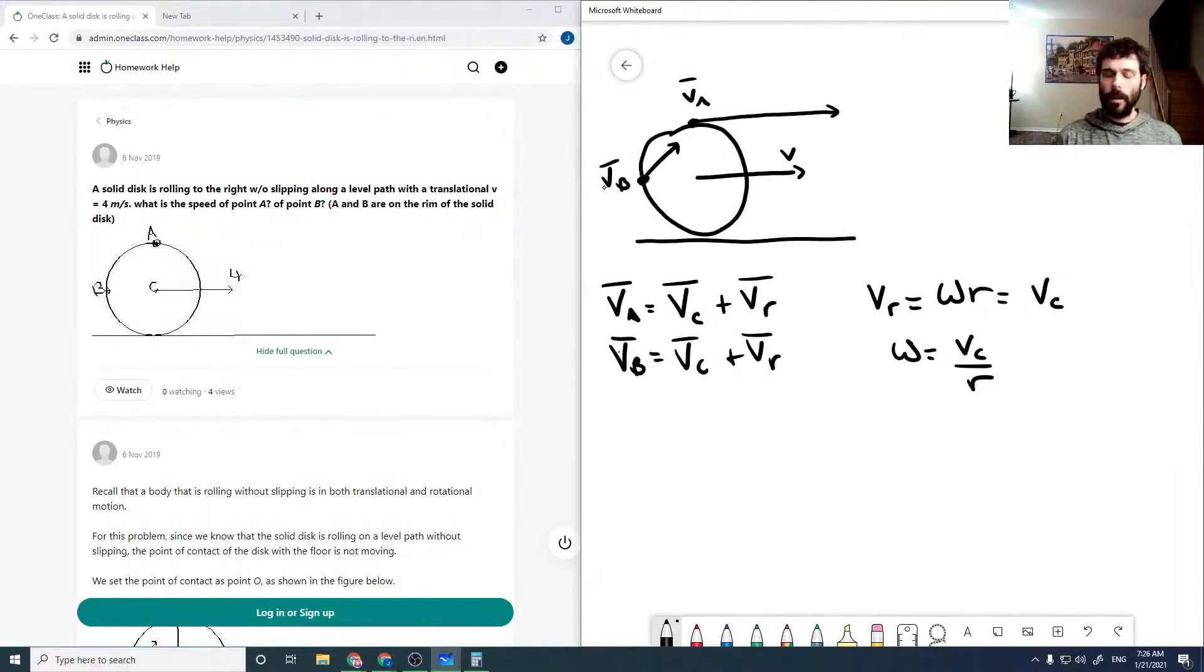Now, at A, this is our VC times X hat, and our radial velocity is also VC times X hat, and so this just equals 2VC X hat.